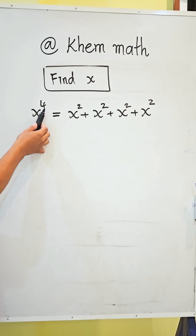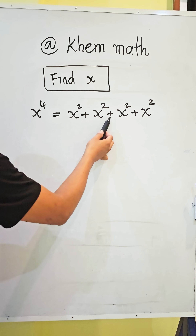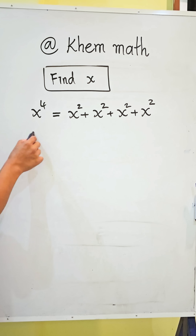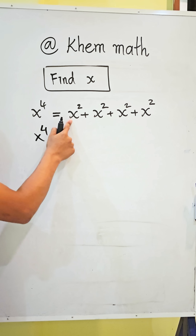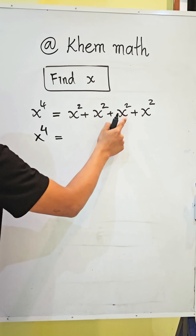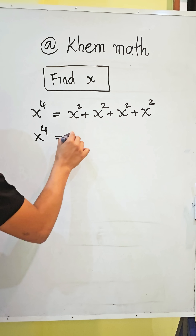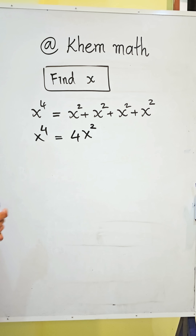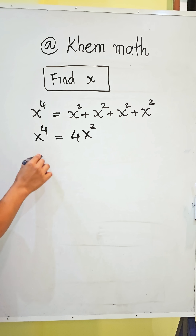We find that x to the power 4 equals x square plus x square plus x square plus x square, which gives us 4x square. We then move 4x square from the right to the left hand side.